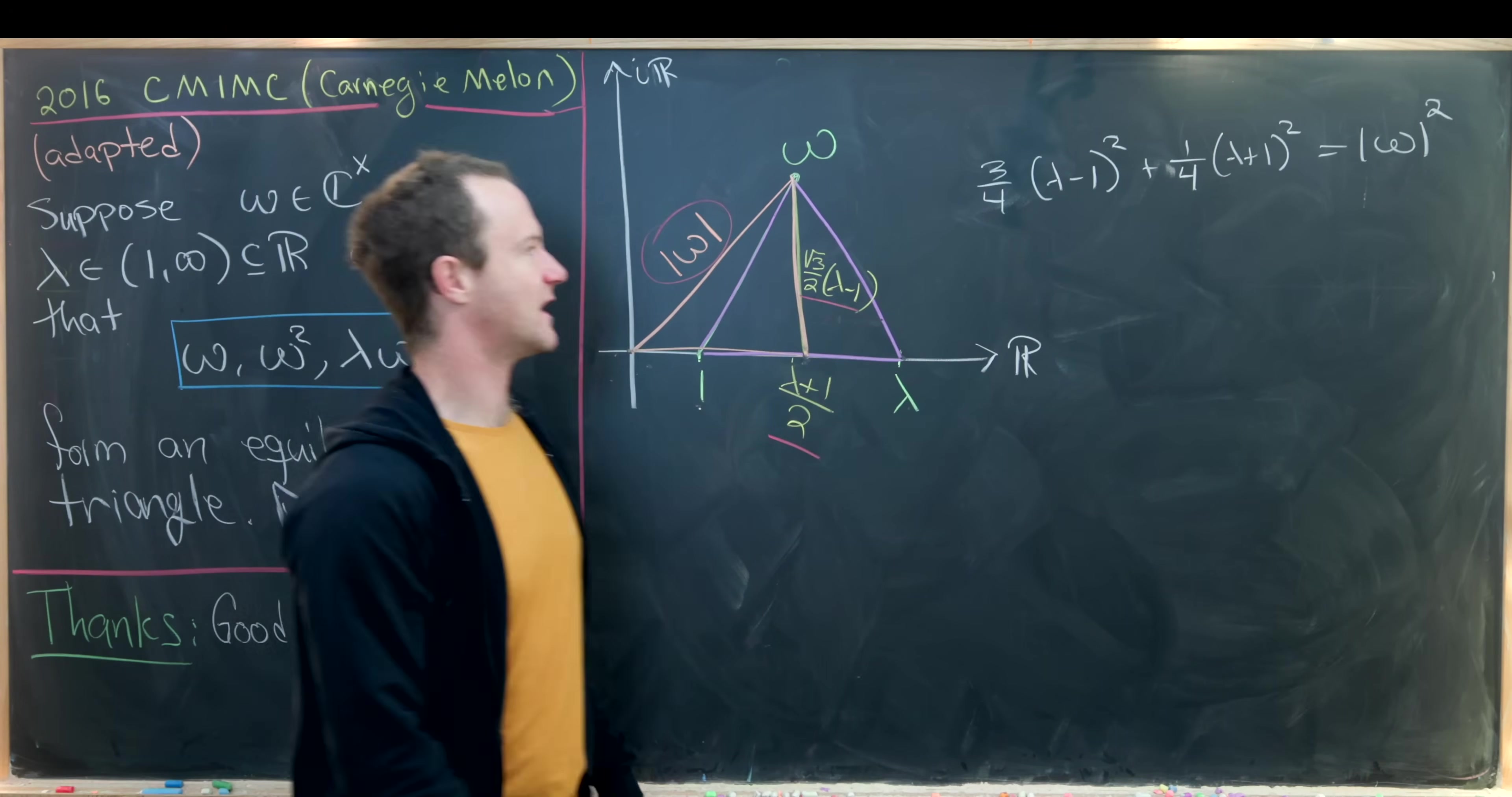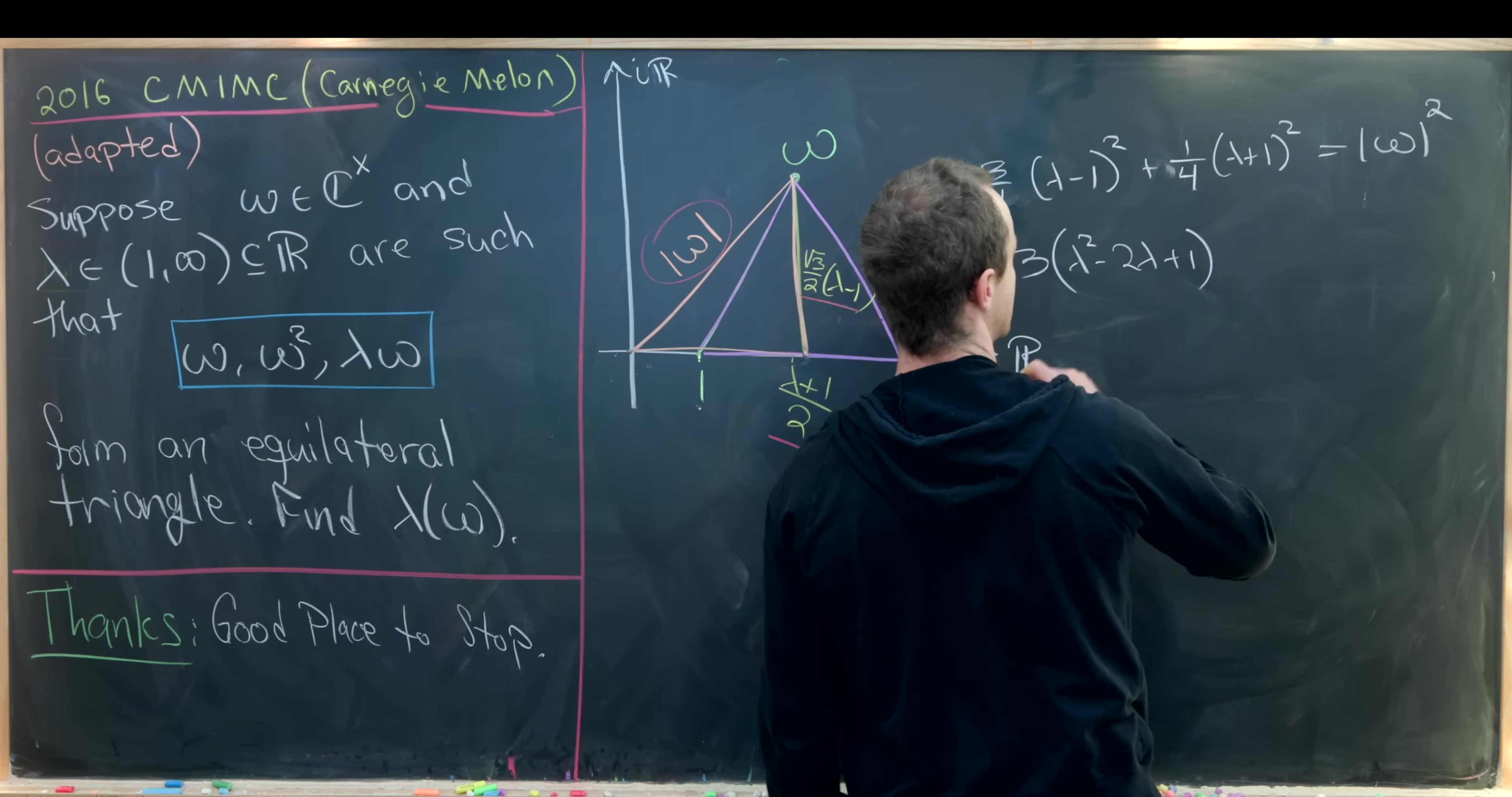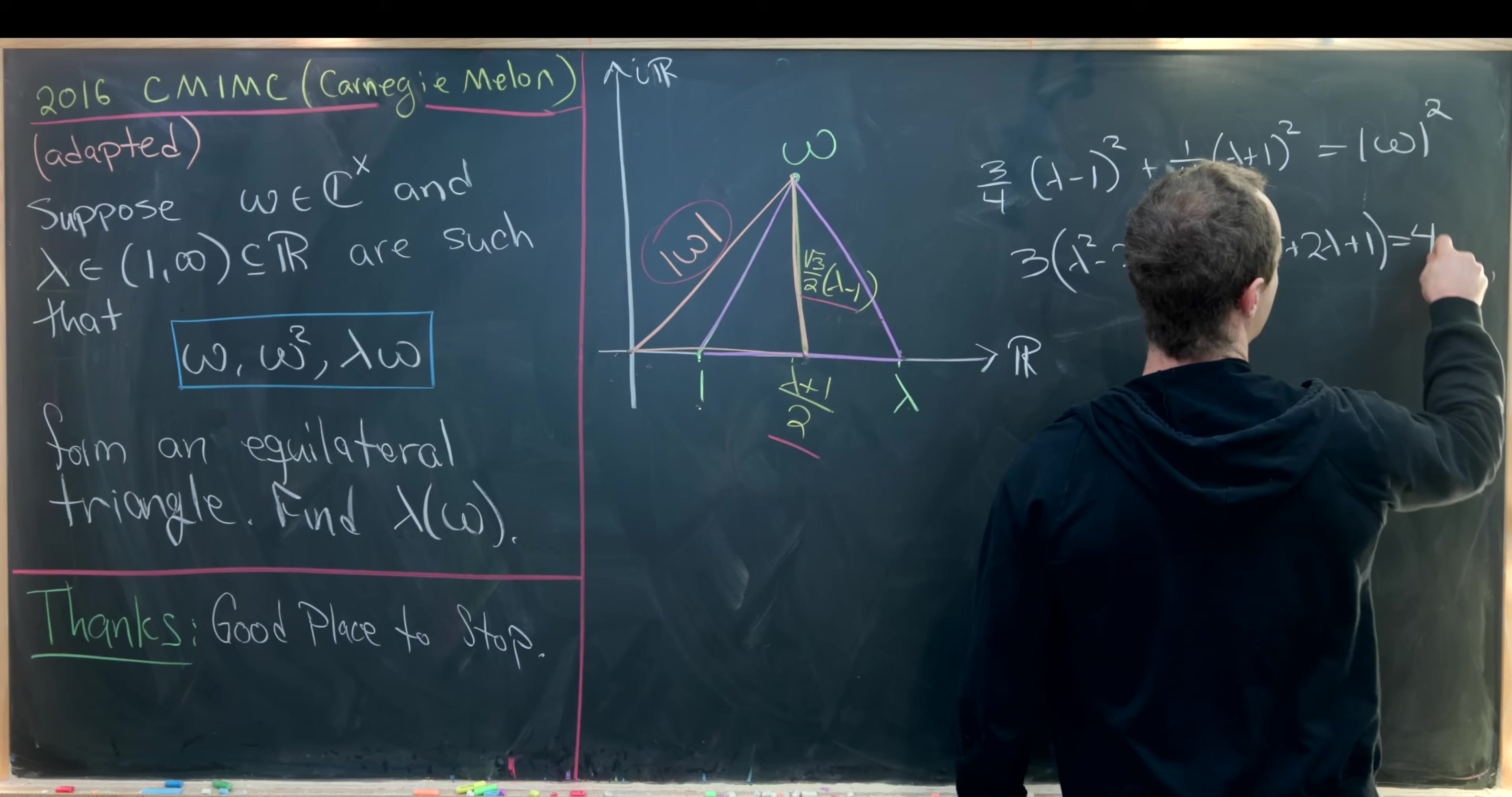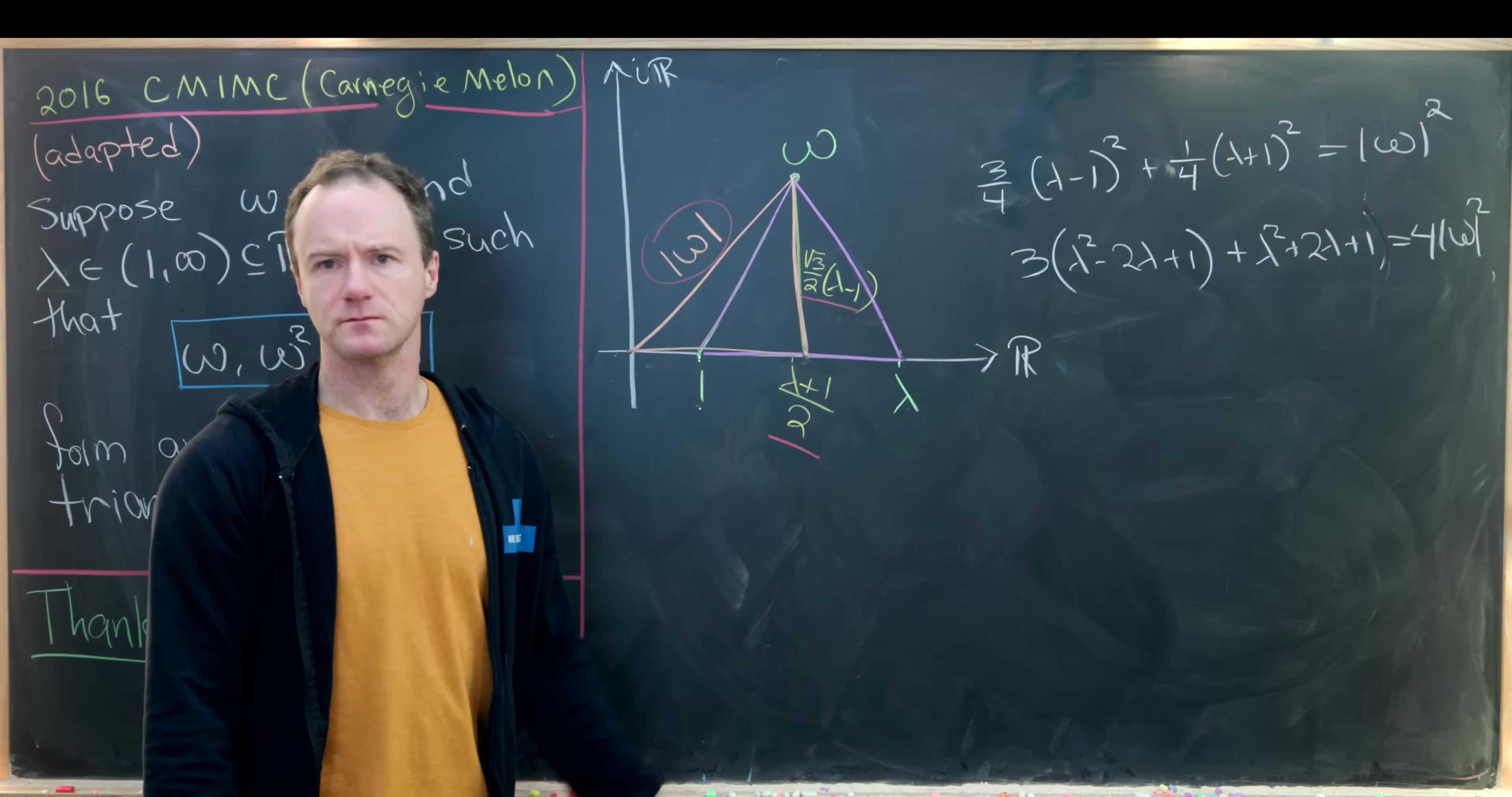Okay, great. So now let's see if we can simplify this a little bit. This will give us 3 times lambda squared minus 2 lambda plus 1 plus lambda squared plus 2 lambda plus 1 equals 4 times the magnitude of omega squared. So I got that just by multiplying both sides of this equation by 4.